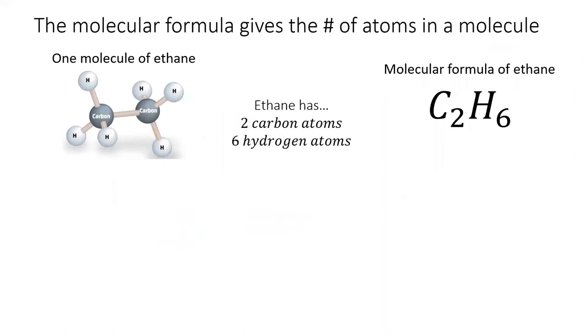Since covalent compounds form discrete entities called molecules, we write the number of each atom in something called the molecular formula. One molecule of the flammable gas ethane has two carbons and six hydrogens, so we write its molecular formula as C2H6.